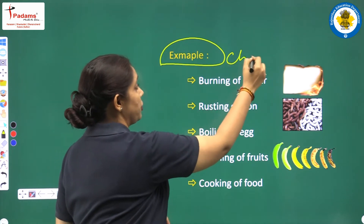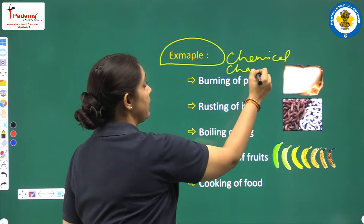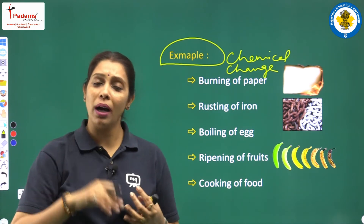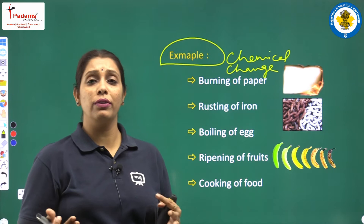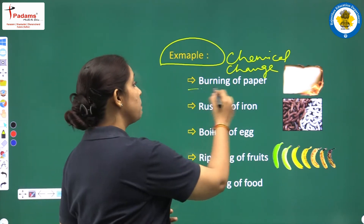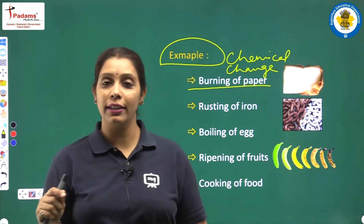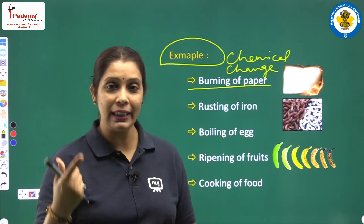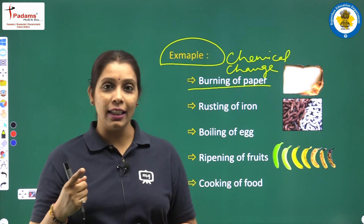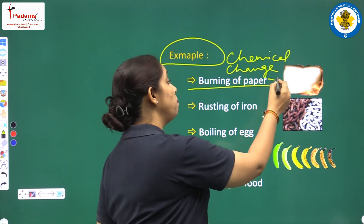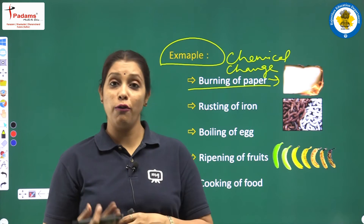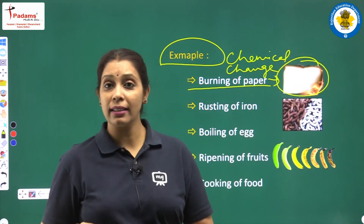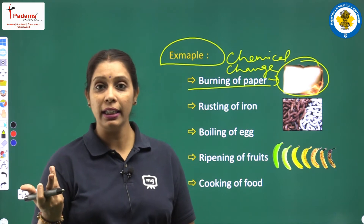Examples of chemical change — there are lots of examples in our surroundings from day-to-day life. First one is burning of paper. Jab bhi hum paper burn karte hain, you can feel a sound also. Jab paper jalta hai, hume koi na koi sound aata hai. When a paper is burning, the chemical composition of paper is totally changed. Kyunki hum paper burn karne ke baad, paper vaapas to nahi mil sakta. Finally, what we get? We get ash.